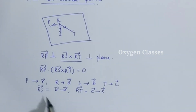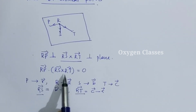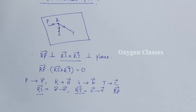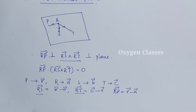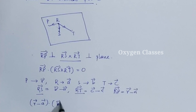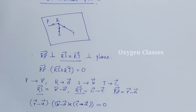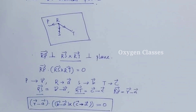We use RS and RT as the two plane vectors. Vector RP = position vector of P minus position vector of R = R minus A. Substituting into the perpendicularity condition, the vector equation of the plane is: (R minus A) dot [(B minus A) cross (C minus A)] = 0. This is the vector equation of a plane passing through three non-collinear points.